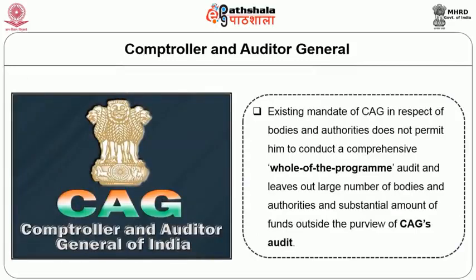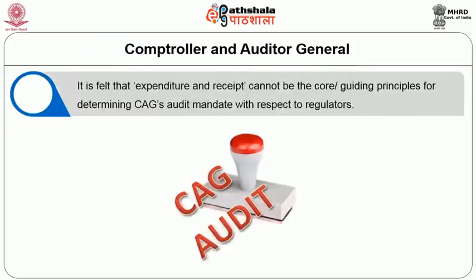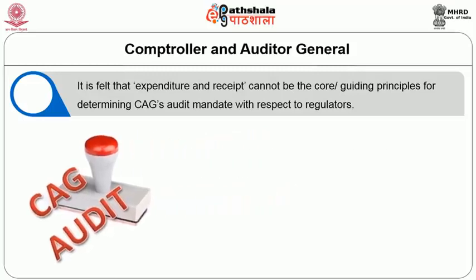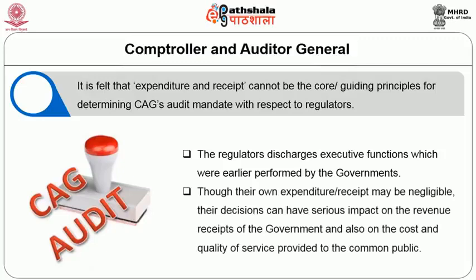However, the existing mandate of the CAG in respect of bodies and authorities does not permit him to conduct a comprehensive whole-of-program audit and leaves out a large number of bodies, authorities and substantial funds outside the purview of CAG's audit. It is felt that expenditure and receipt cannot be the core guiding principle for determining the CAG's audit mandate with respect to regulators. Though a regulator's own expenditure or receipt may be negligible, their decisions can have serious impact on the revenue receipts of the government and on the cost and quality of services provided to the common public.